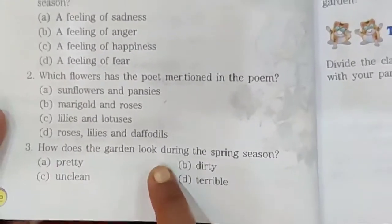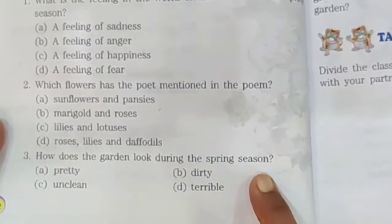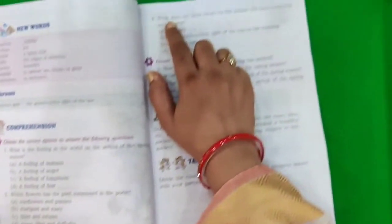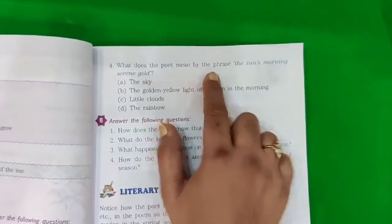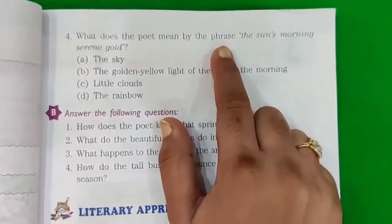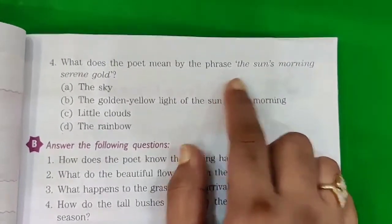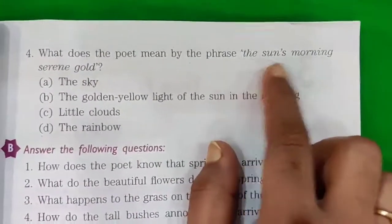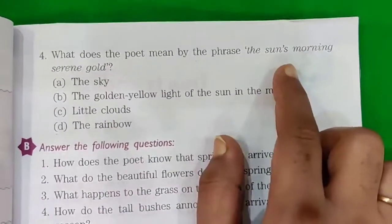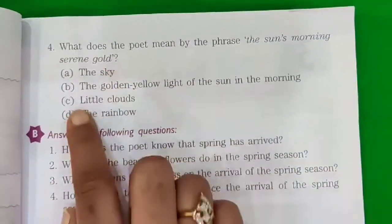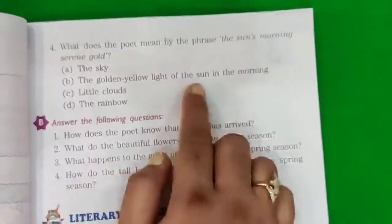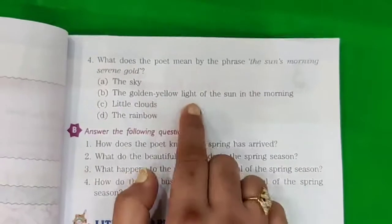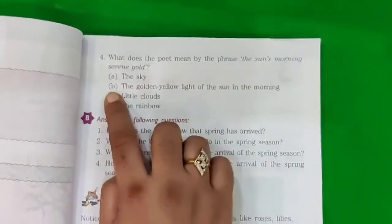How does the garden look during spring season? The garden looks very pretty, so we take option A. Next: what does the poet mean by the phrase 'the sun's morning serene gold'? It is a phrase — a group of words, not a sentence. It means the golden yellow light of the sun in the morning. So we will take option B.